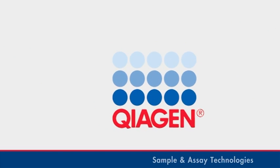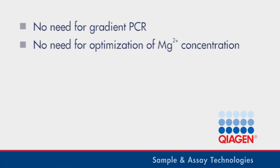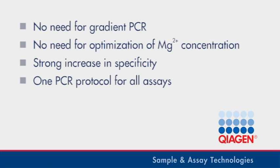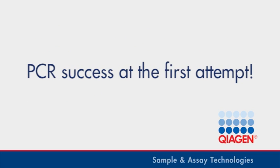This means no need for gradient PCR, no need for optimization of magnesium concentrations, a strong increase in specificity, one PCR protocol for all assays, time and cost savings, and ease of use. QIAGEN delivers PCR success at the first attempt.